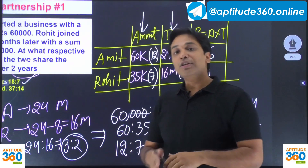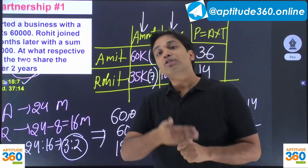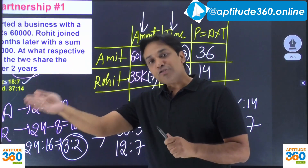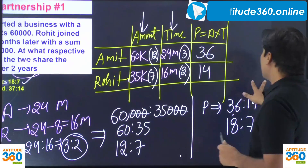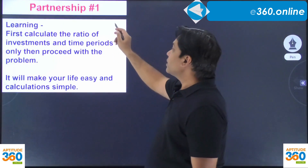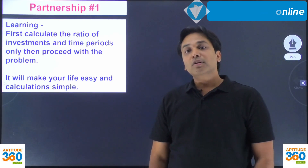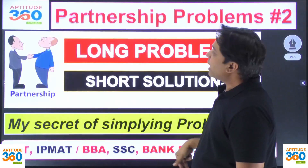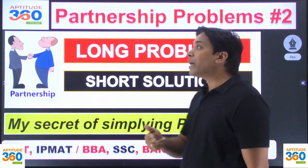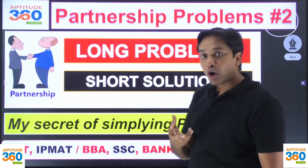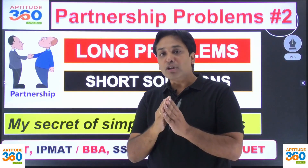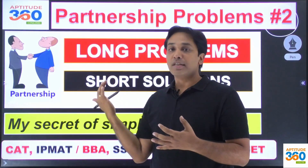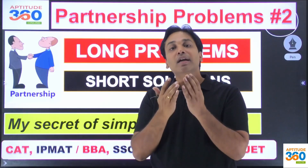So the two steps you are learning: before finding the profit ratio, simplify the amount and time separately, then multiply them. Write this down in your copy for revision. In video number one we covered the theory; in video number two we will solve five or six better problems based on this understanding. See you there — bye bye and take care.